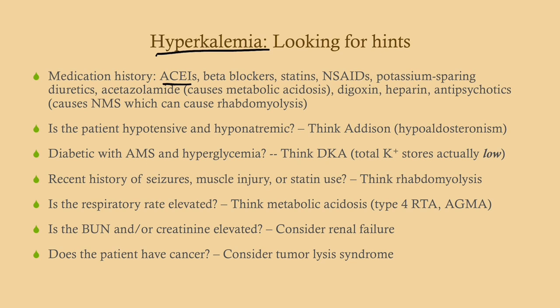If the patient has a recent history of seizures, muscle injury, or statin use, think of rhabdomyolysis. If the respiratory rate is elevated, consider the possibility of a metabolic acidosis. The ones that cause hyperkalemia are type 4 renal tubular acidosis — that would be in a non-anion gap metabolic acidosis — and the various causes of non-anion gap metabolic acidosis.